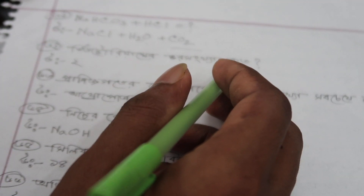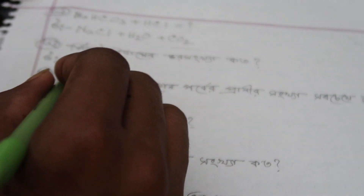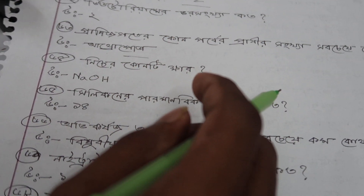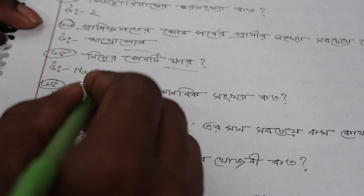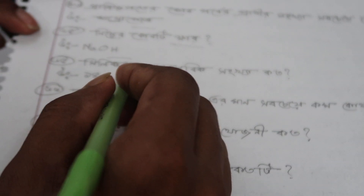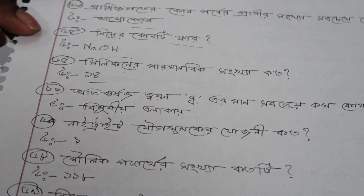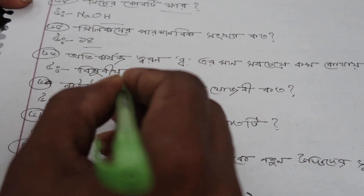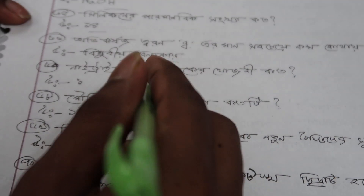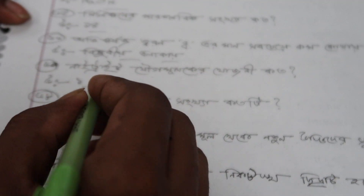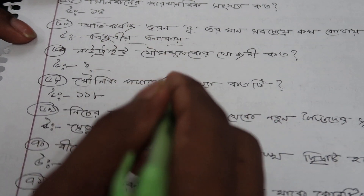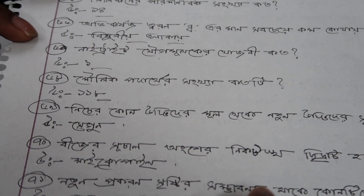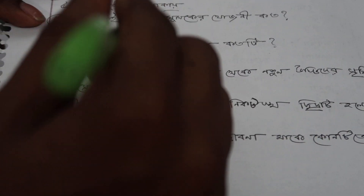Deuterium of hydrochloric acid. 2. Sodium hydroxide. 2. 4. 5. 6. 7. 9. 10.